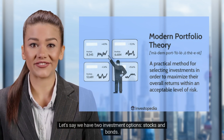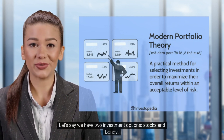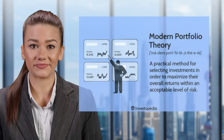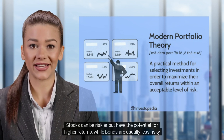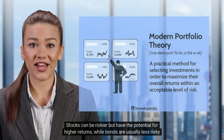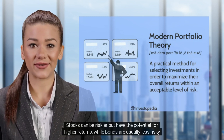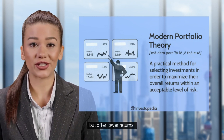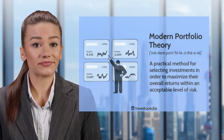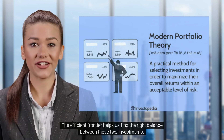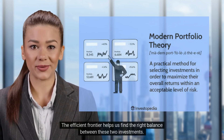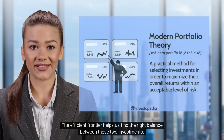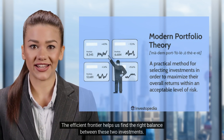Let's say we have two investment options: stocks and bonds. Stocks can be riskier but have the potential for higher returns, while bonds are usually less risky but offer lower returns. The efficient frontier helps us find the right balance between these two investments.